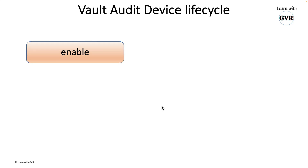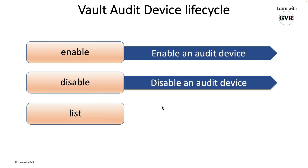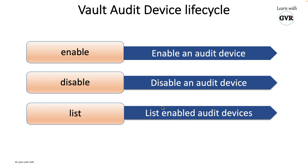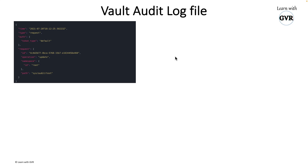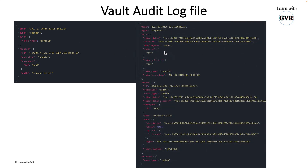From a lifecycle point of view, there are three commands: Vault audit enable, Vault audit disable, and Vault audit list. List will show which audit devices are currently enabled. A sample audit log file, taken from the Vault documentation, shows the JSON format with request and response objects — you'll see 'type equal to request' and 'type equal to response' clearly shown.